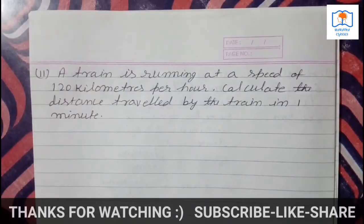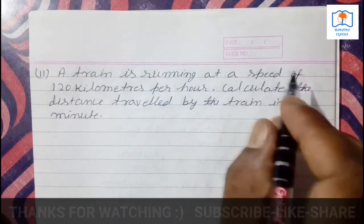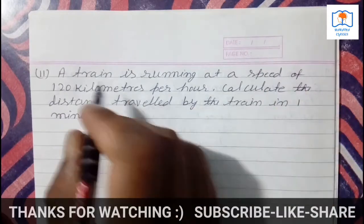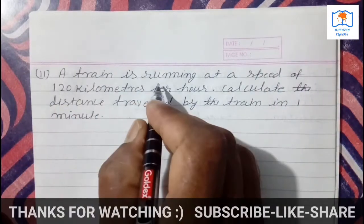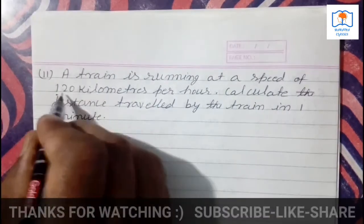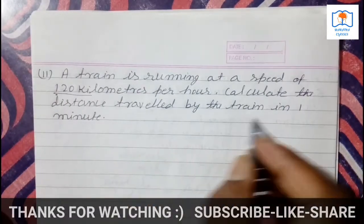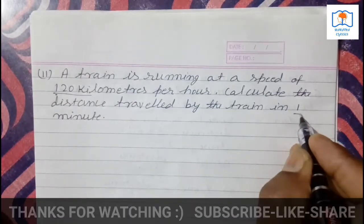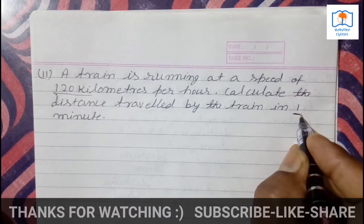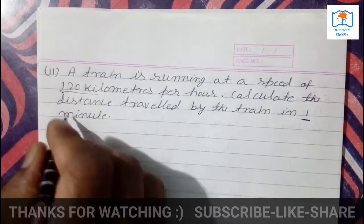Question number 11. Children, these questions are from your books and some are from NCERT. A train is running at a speed of 120 kilometer per hour. Calculate the distance traveled by the train in 1 minute. How much will it cover? Children, first you write the given data.